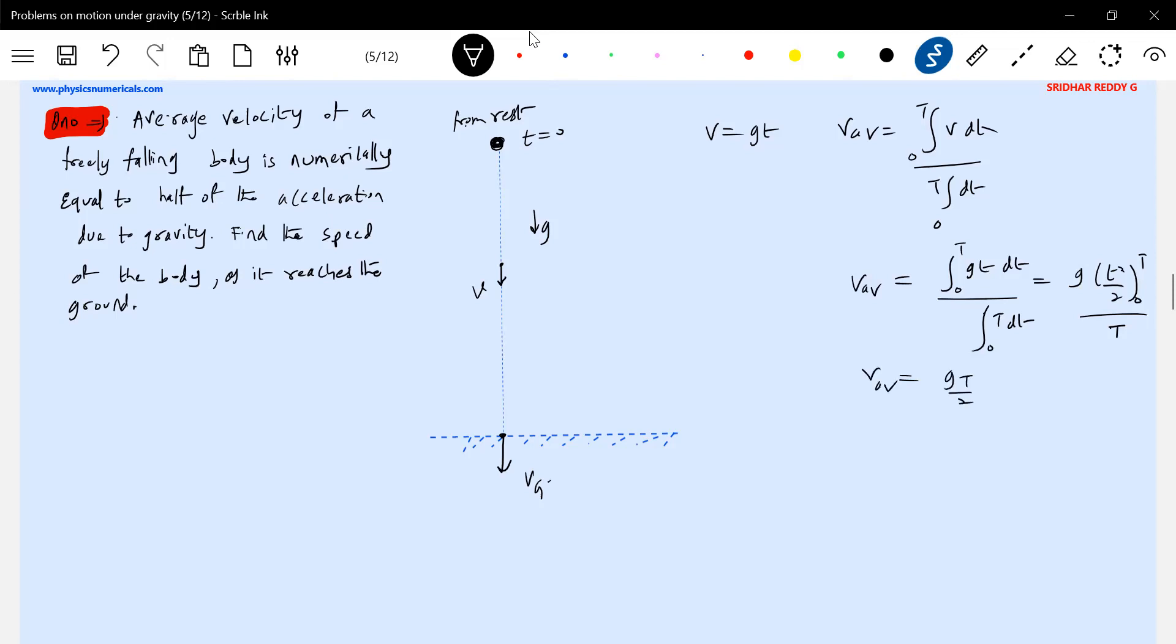Okay, this will become gt by two. After substituting limits and simplifying everything, this is numerically equal to g. Given, I'll substitute this.